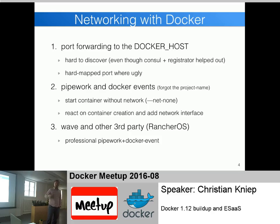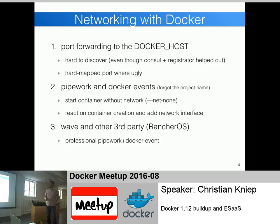You had a lot of third-party tools like Weave or Rancher OS. These had professional pipe work and Docker events setups that could pre-create networks spanning multiple hosts. But for this it's not upstream Docker. In Weave's case, you don't use the Docker command line tool - you use the Weave command line tool, which was just a wrapper around Docker. So that was networking with Docker before 1.9.